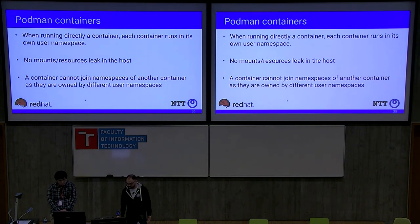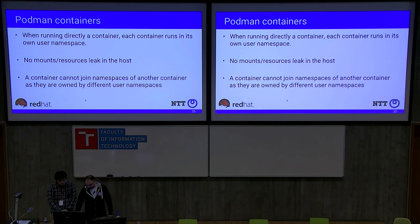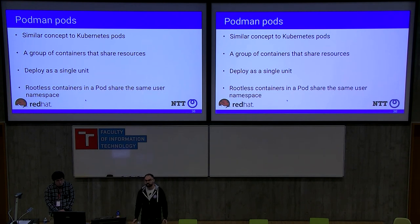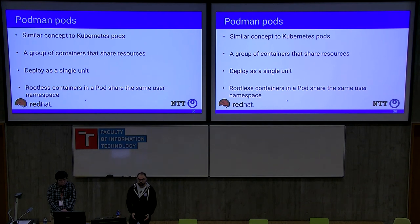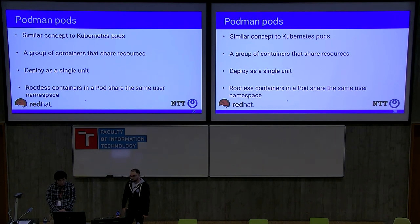Since containers run in different user namespaces they can't join each other's namespaces — another level of protection. Podman has pods, and pods are by definition a group of containers that need to share resources, which conflicts with this isolation. So for a pod we create just one user namespace and every container that is part of the pod joins the same namespace, so they can share resources while still feeling part of the same environment.